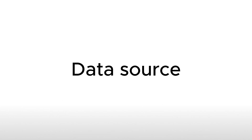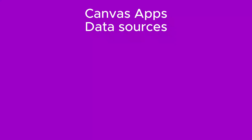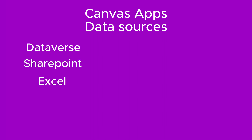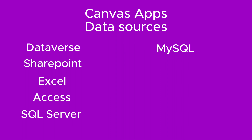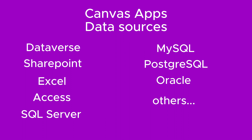When selecting whether you are going to build a Canvas App or a Model Driven App, the first thing you need to consider is which data source you will be using. Canvas Apps can be built on pretty much any data source — Microsoft data sources such as Dataverse, SharePoint, Excel, Access, and SQL Server, as well as other vendors' data sources such as MySQL, PostgreSQL, Oracle, among many others. There are more than 1,000 connectors to choose from.